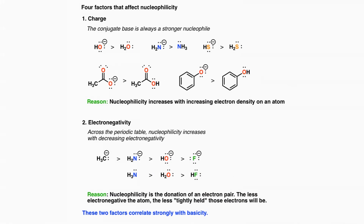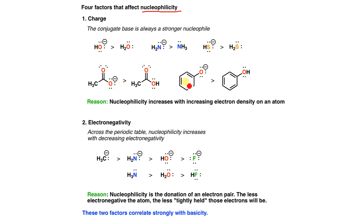A few factors affect nucleophilicity in protic solvents. First, charge: the conjugate base always acts as a stronger nucleophile than the neutral species. So OH- has more nucleophilicity than H2O; NH2- more than NH3; HS- more than H2S. Phenoxide is more nucleophilic than phenol.